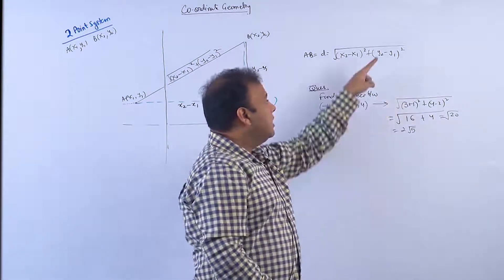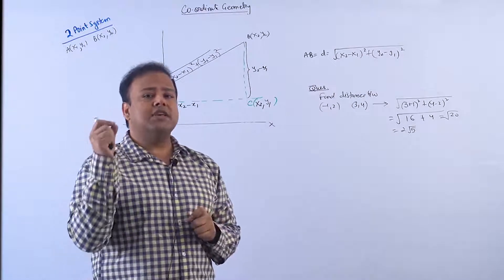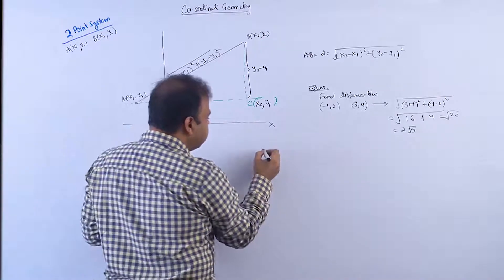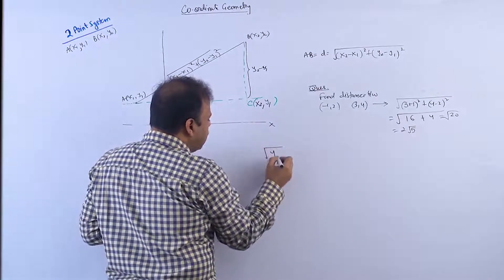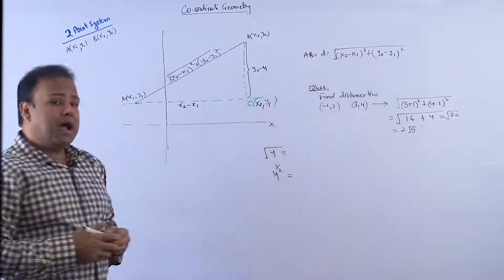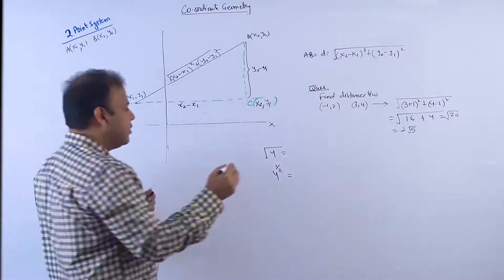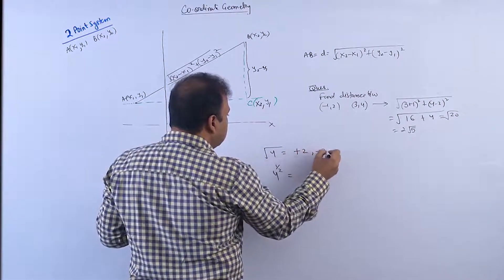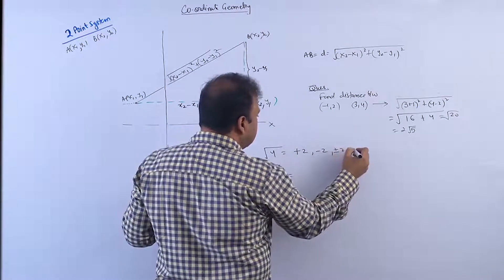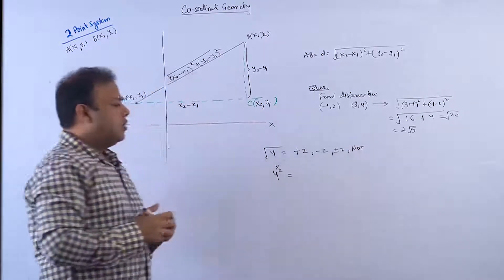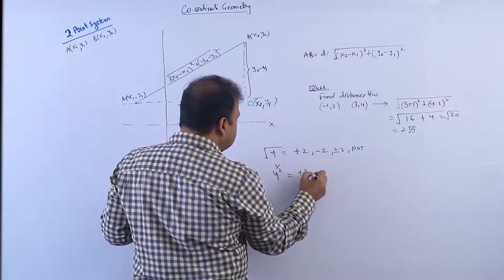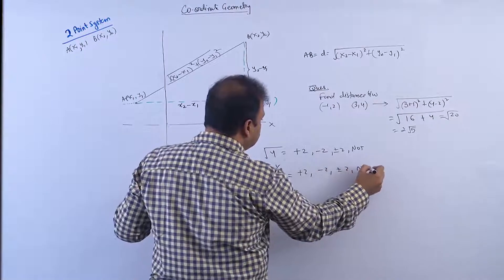The radical sign always gives you a positive value — only a positive value. For example, consider √4 and 4^(1/2). What is the value of √4? Most students say ±2, and similarly for 4^(1/2).